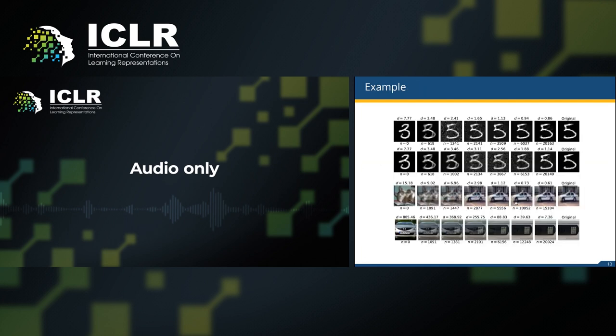And we could also generate high-quality adversarial examples using around 3,000 queries as shown in the figure. By just around 3,000 queries, we can generate a car image that is very close to the original one, but the model thought it is a cat instead.